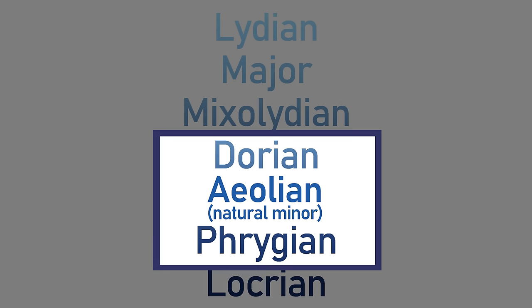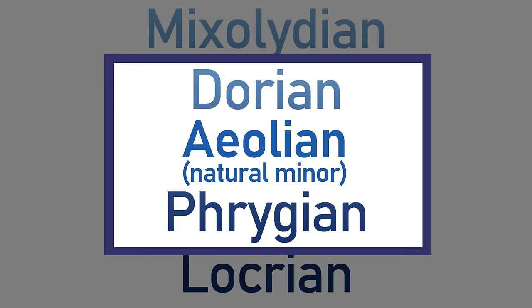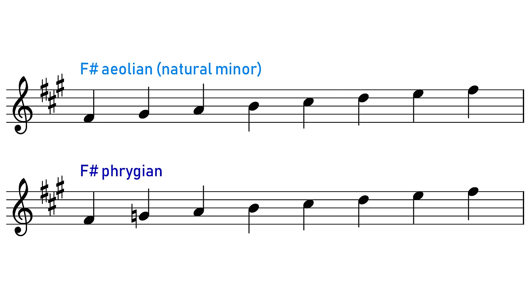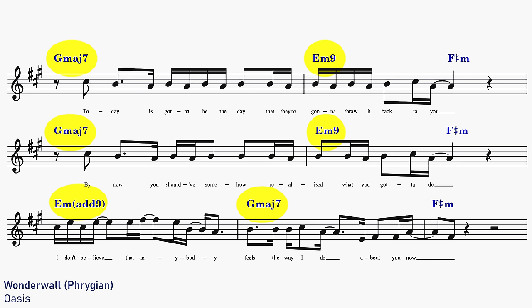So that was Dorian, the slightly brighter version of the minor scale. Now let's look at Phrygian, the slightly darker version of the minor scale. Phrygian is exactly the same as Aeolian, the natural minor, but this time the second degree has been lowered. So let's get the second degree, that G natural, into the harmony here, and we can hear what Wonderwall would sound like in the Phrygian mode.